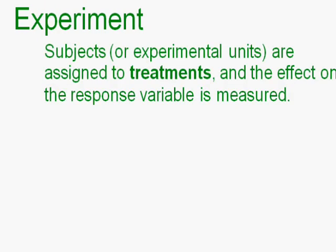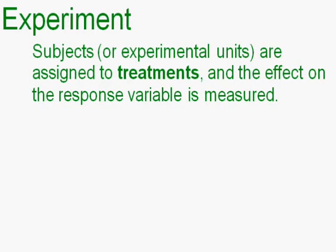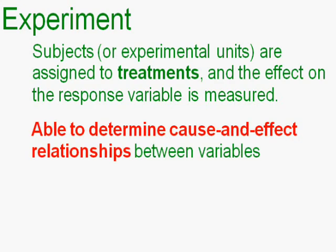We also have experiments. Experiments are different from observational studies in that you mess with the subjects. The subjects, or experimental units, are assigned to treatments and the effect on the response variable is measured. With experiments, you are able to determine a cause-and-effect relationship between variables. That's one of the biggest differences — with an experiment you can assign causation.